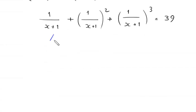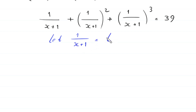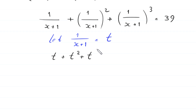Now suppose that 1 over (x+1) is equal to t. So this equation becomes t plus t squared plus t cubed is equal to 39.